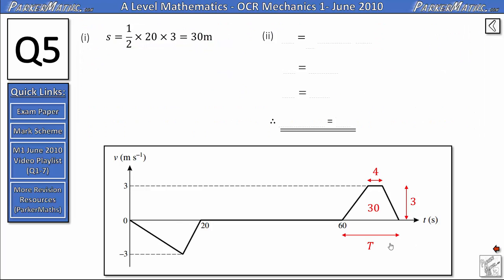So all we need to do now is think about the area of a trapezium with one of the sides unknown. So we've got a displacement of 30, which equals half the sum of the parallel sides, which will be 4 plus T, multiplied by the height, 3. If we simplify this a little bit, to remove the half, we'll multiply by 2,